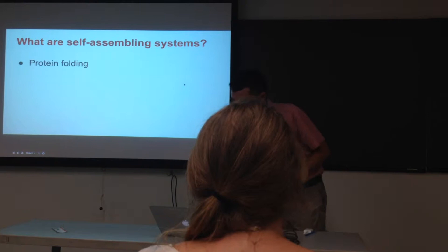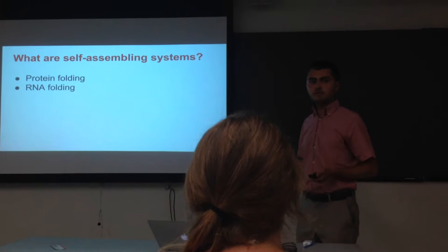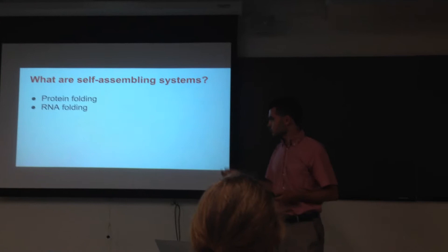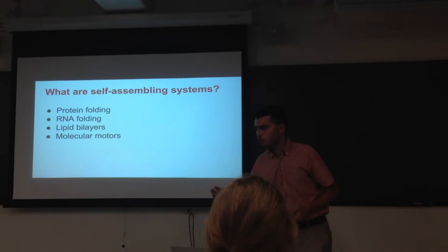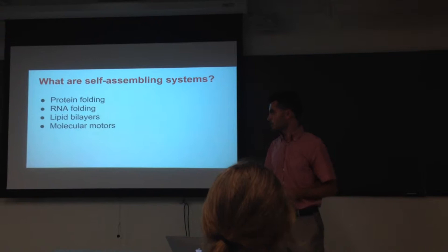So what are examples of self-assembling systems? One is protein folding, of course. Then there's RNA folding. The ribosome, which makes proteins, is largely comprised of RNA. So the RNA has to adopt a structure that allows it to translate from mRNA to protein. Lipid bilayers self-assemble to form the cell membrane. Molecular motors are assemblies of proteins that come together to do things such as propelling a bacterium or even making ATP.